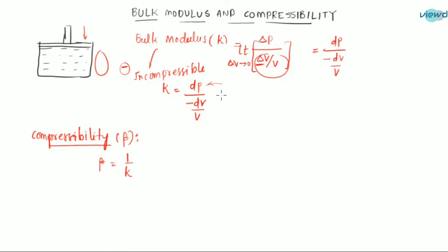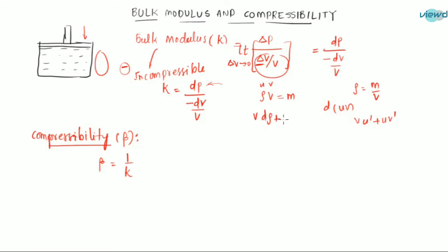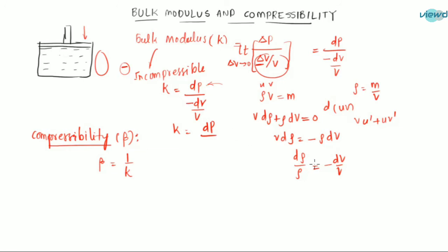Bulk modulus can also be represented in another formula. We have rho times V equal to mass, since density equals mass divided by volume, so mass equals density times volume. If we differentiate this, using the product rule d(UV) = V dU + U dV, we get V d-rho plus rho dV equals zero, since differentiation of a constant is zero. So V d-rho equals minus rho dV, which gives d-rho by rho equals minus dV by V. Substituting this, K equals dP divided by d-rho by rho.